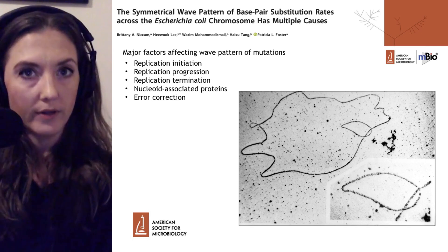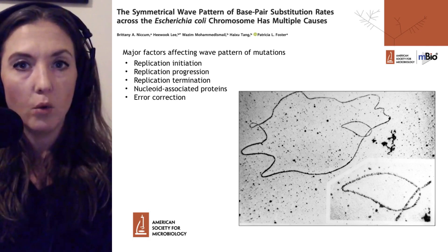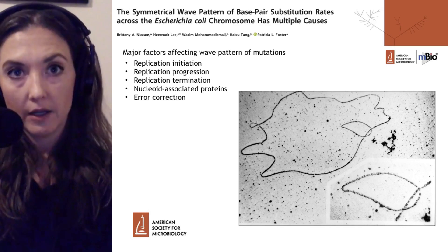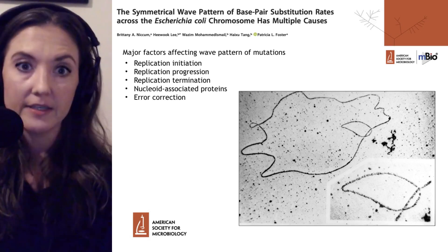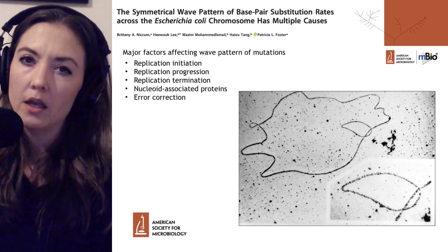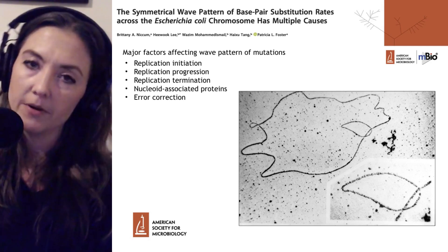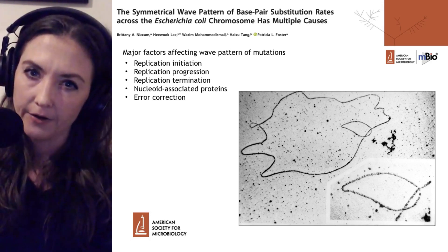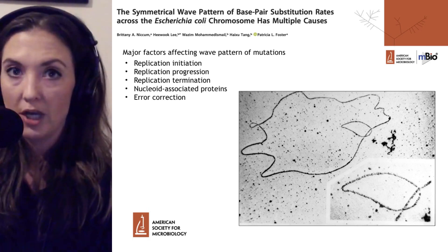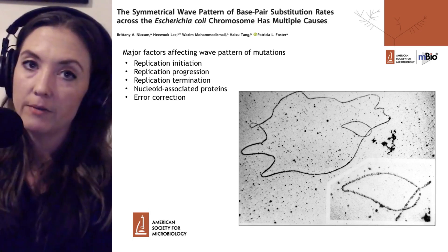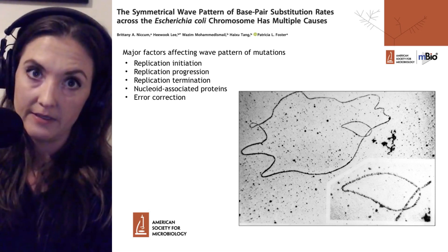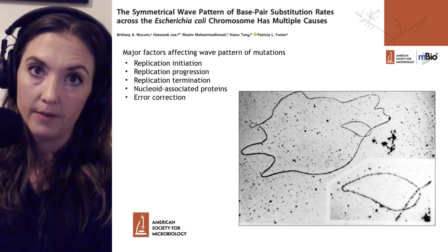The importance of this research extends beyond E. coli to many other gram-negative bacteria such as Vibrio and Pseudomonas, which show a similar wave-like pattern of base pair substitutions. This has implications for mutational hotspots and potentially even strain adaptation or speciation of some of these different species.